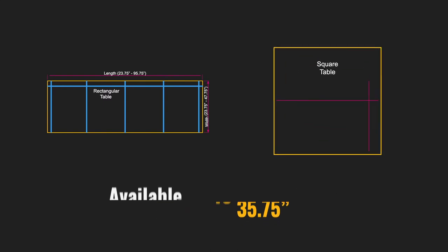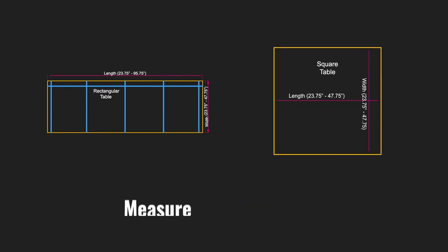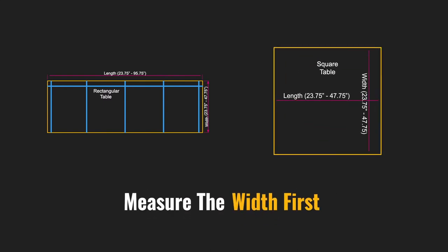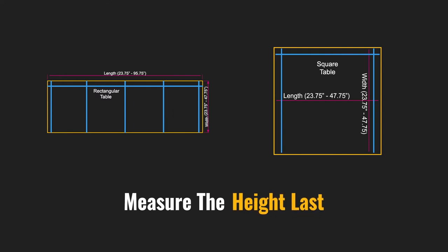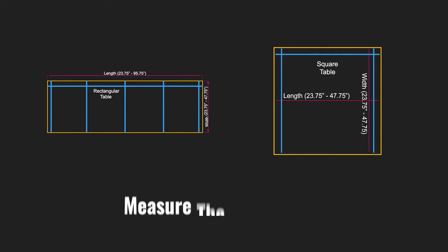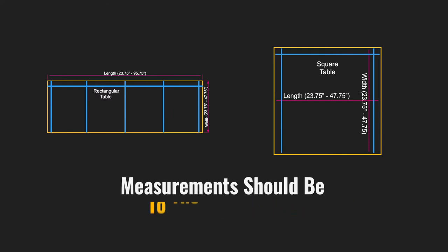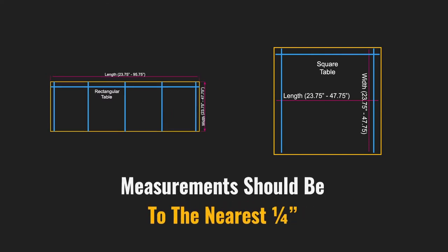When measuring for a square or rectangular table, measure the width first, the length second, and the height last. Measurements should be to the nearest quarter of an inch.